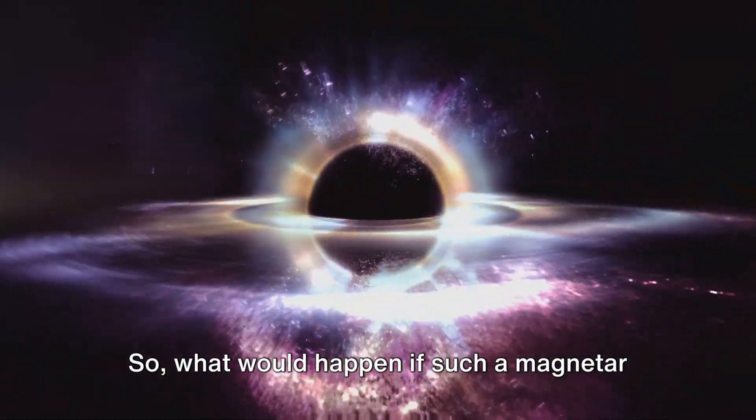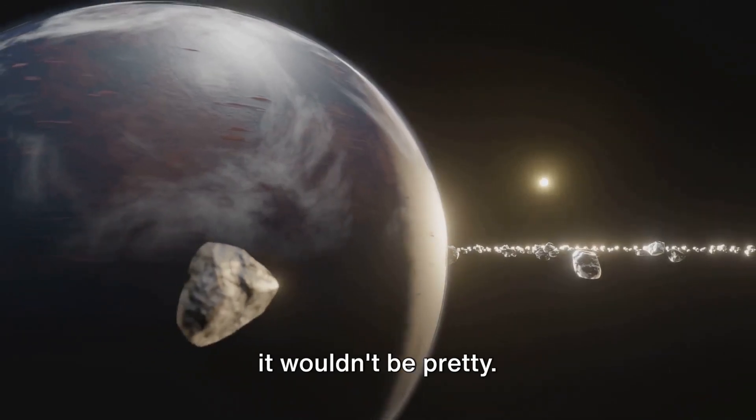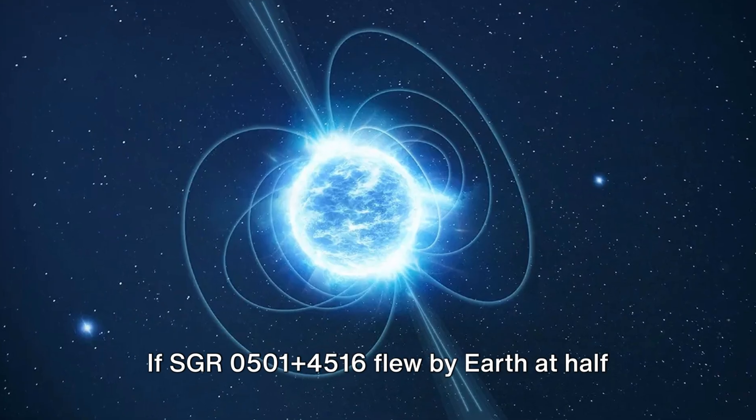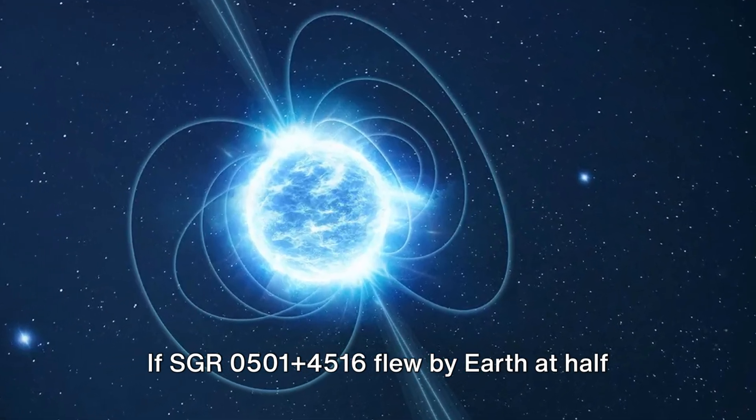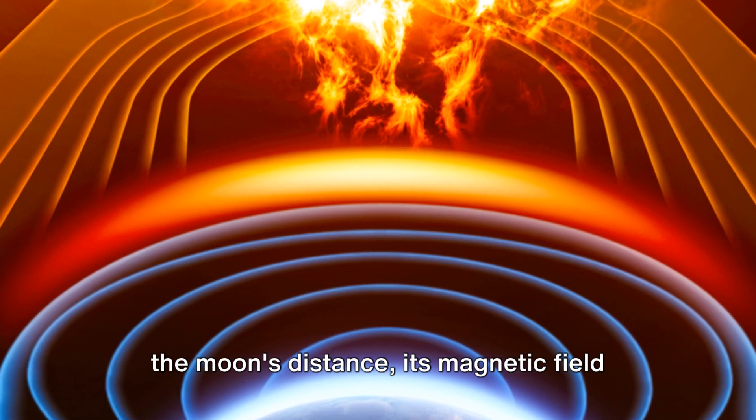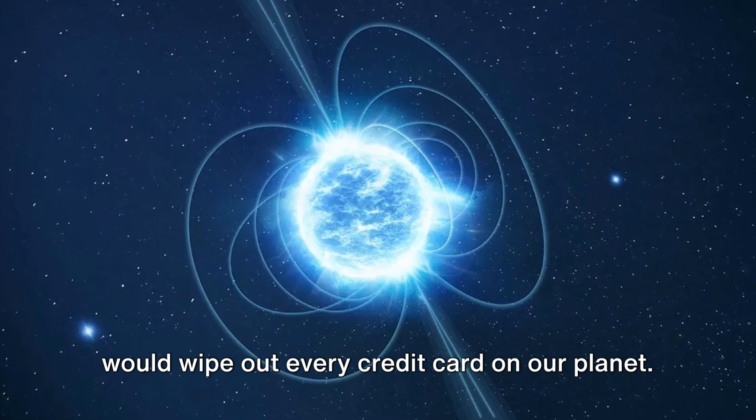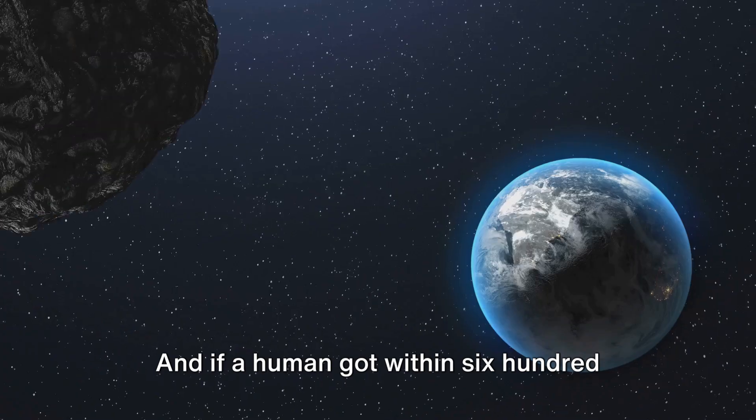So, what would happen if such a magnetar came too close to Earth? Let's just say it wouldn't be pretty. If SGR 0501 plus 4516 flew by Earth at half the moon's distance, its magnetic field would wipe out every credit card on our planet.